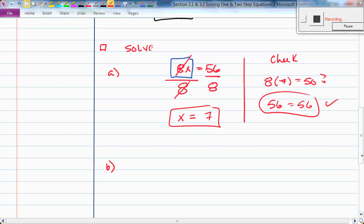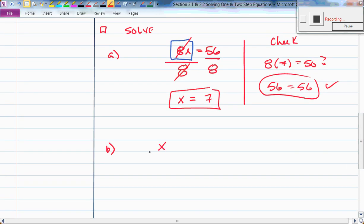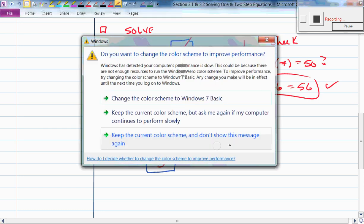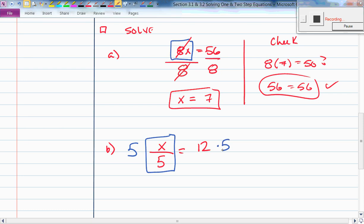Here's part B for you. If I have x divided by 5, and I set that equal to 12, let's identify the variable. What variable am I using? X. Good. And what am I doing to my variable x? I'm dividing by 5. What is the inverse of dividing by 5? Multiplying by 5. 5 divided by 5 gives me 1, so that means it has to be 12 times 5, which is 60.